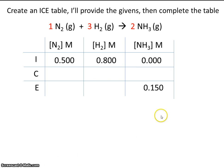Welcome back. So this is the initial concentration of ammonia, and this is the equilibrium concentration of ammonia. If we started with zero and we ended with 0.15, that means the change was an increase of 0.15.